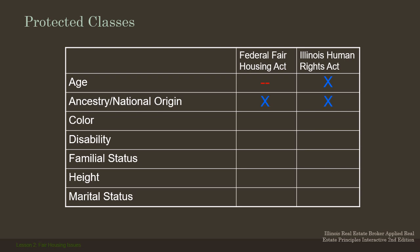Ancestry and national origin are covered under both federal and state acts. Color is under both federal and state fair housing acts. Disability is under federal and state fair housing acts. Familial status is under both. Height is not covered under either — there's no protection on your height for fair housing. Marital status is not under the federal act, but we do have marital status covered under the Illinois Human Rights Act. So technically a landlord couldn't discriminate against opposite-sex tenants who were not married.